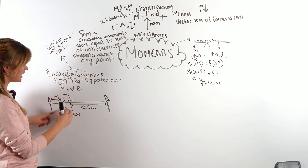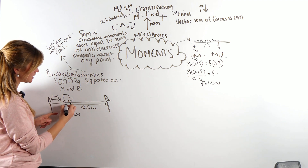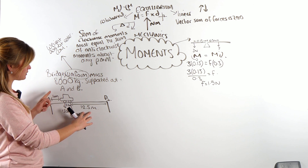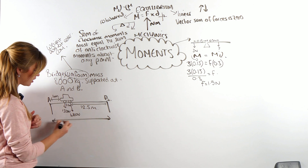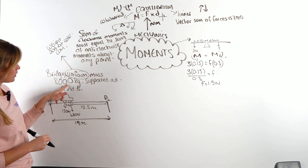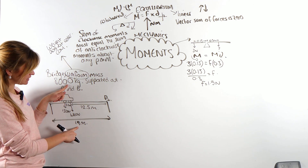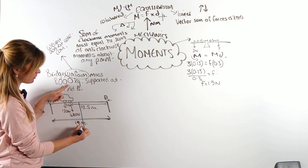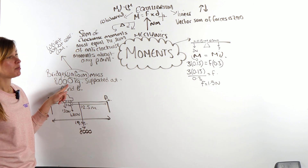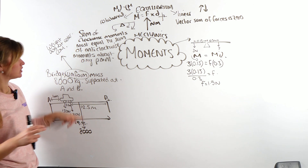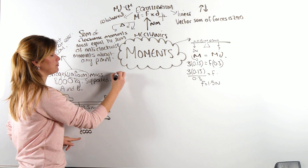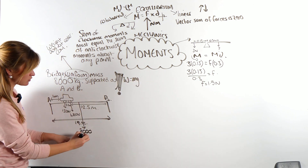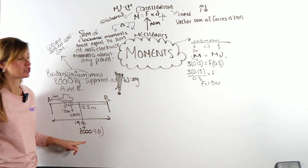The distance between the two tyres is 2.5 metres. So the total bridge length is 4 + 2.5 + 12.5 = 19 metres. The weight acts at the midpoint, which is 9.5 metres from A. Because the bridge mass is in kilograms, we use W = mg, so the weight is 8,000 × 9.81.